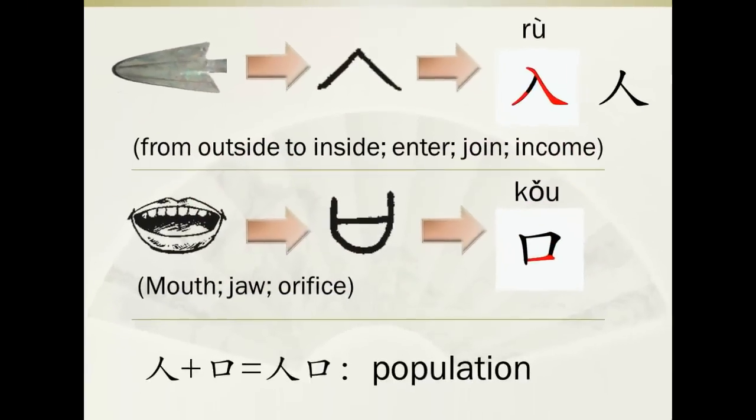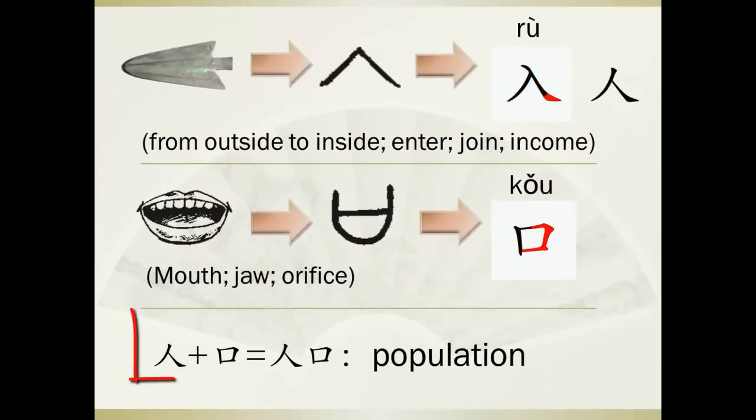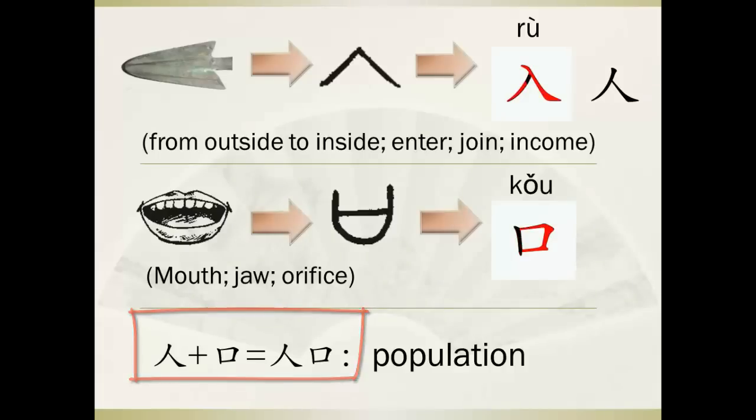If we put 人 (rén) and 口 (kǒu) together, we get the zi 人口, which means population.